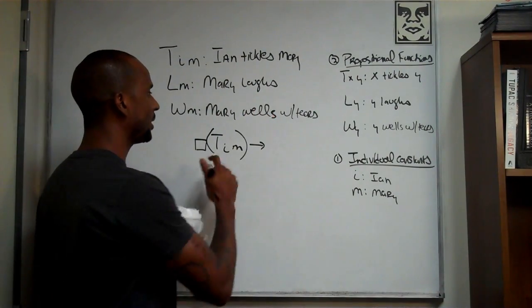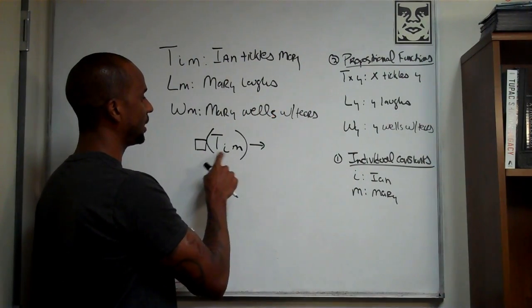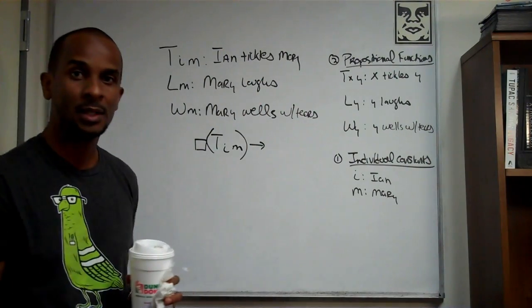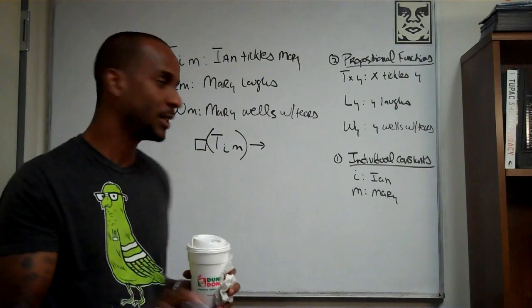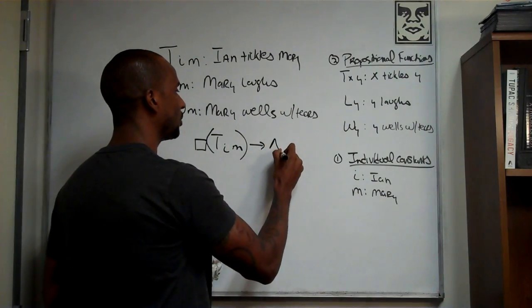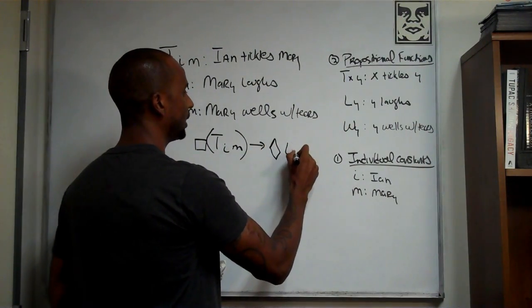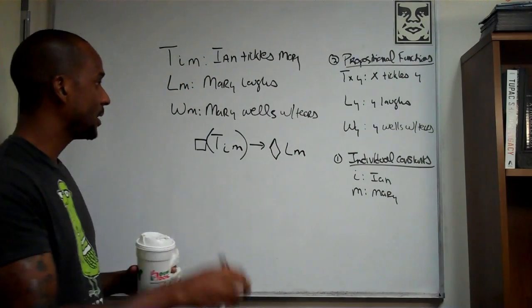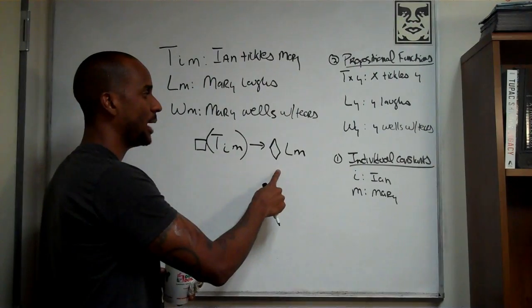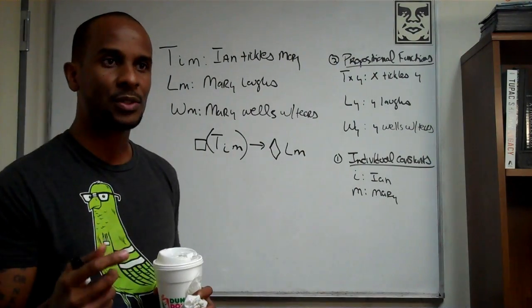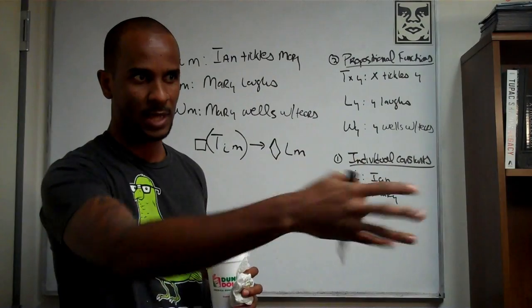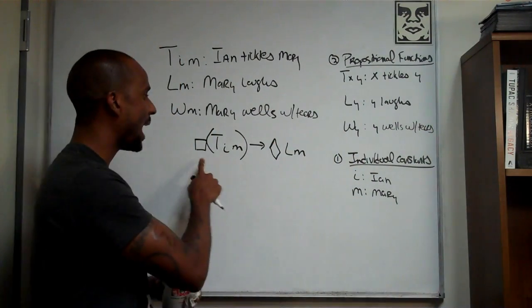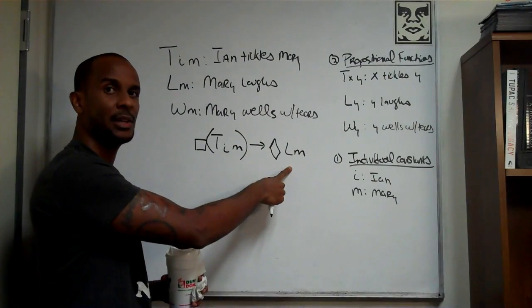Isn't it the case that if we talk about it's necessary that Ian tickles Mary, then, since we know that laughter is a consequence of tickling, but is it necessitated by tickling, wouldn't it then be that it's possible that Mary laughs? If that's the case, if it's possible that Mary laughs, then we'd have to ask ourselves on the condition, at time T1, did she laugh? Did she, in fact, laugh? Because I don't think it follows that it has to be necessary that she laughs.